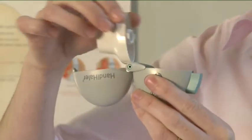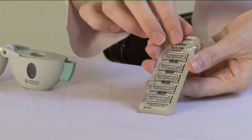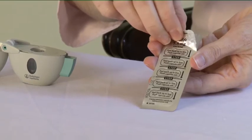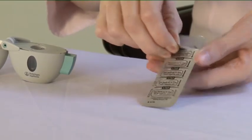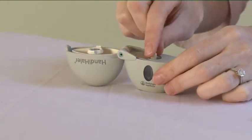Next, remove the capsule from the blister strip. To do this, you first need to separate the blister strips by tearing along the perforation. Peel back the foil using the tab until one capsule is visible, then place the capsule in the chamber.